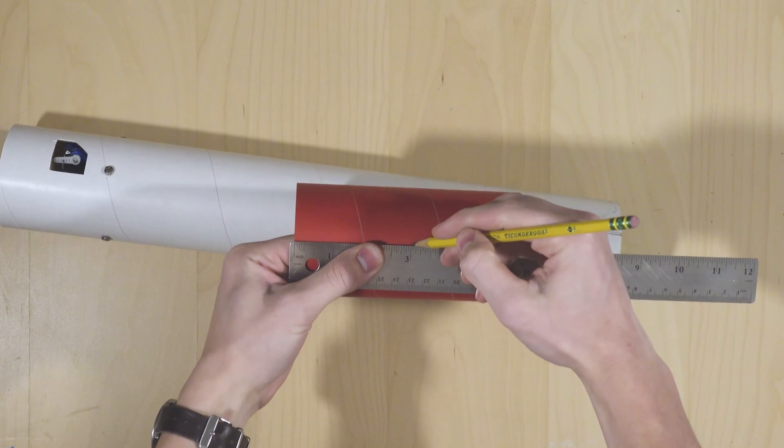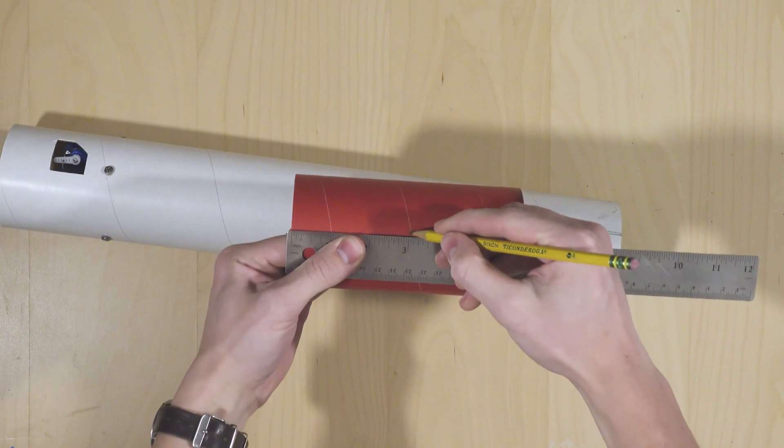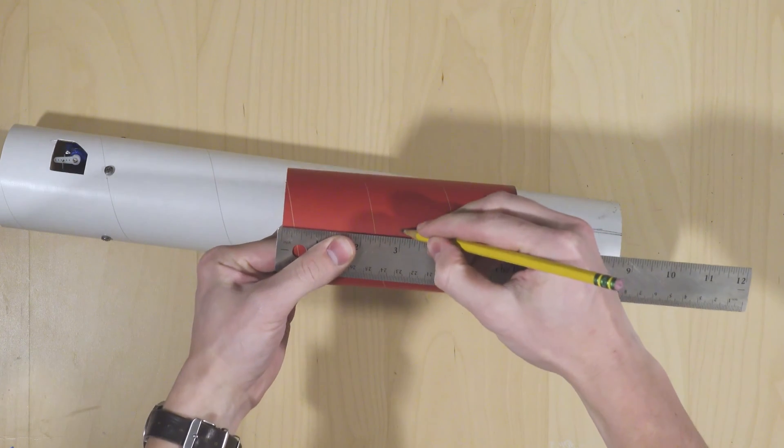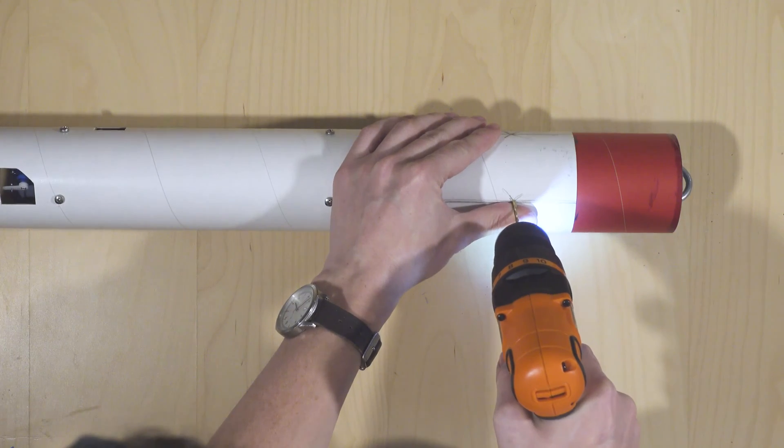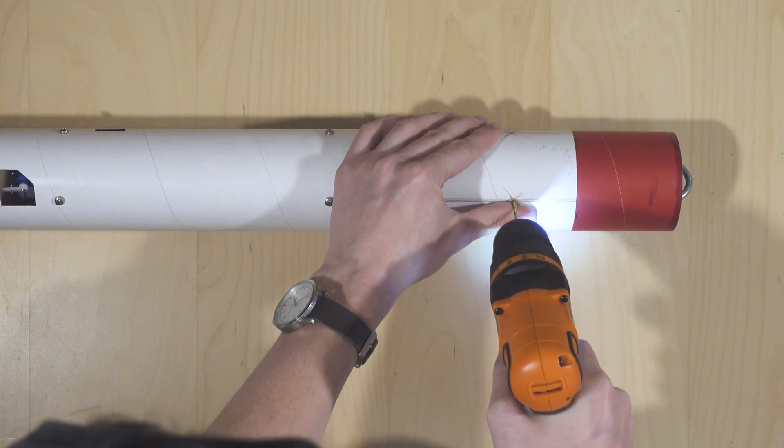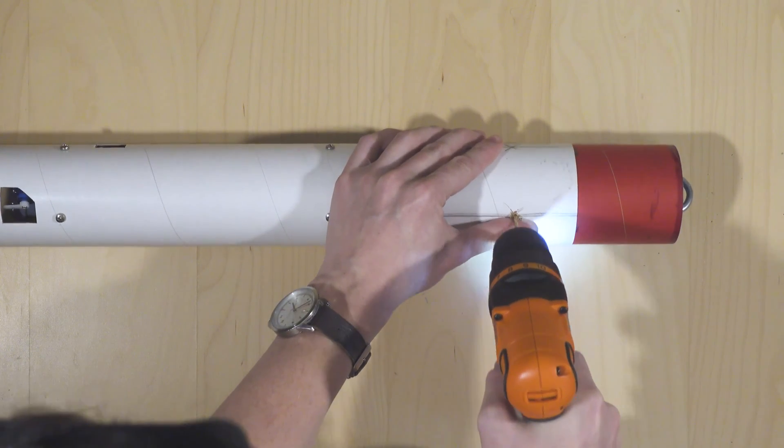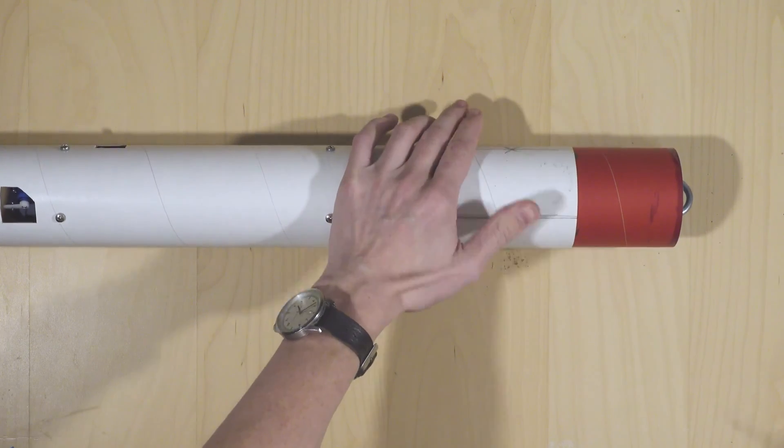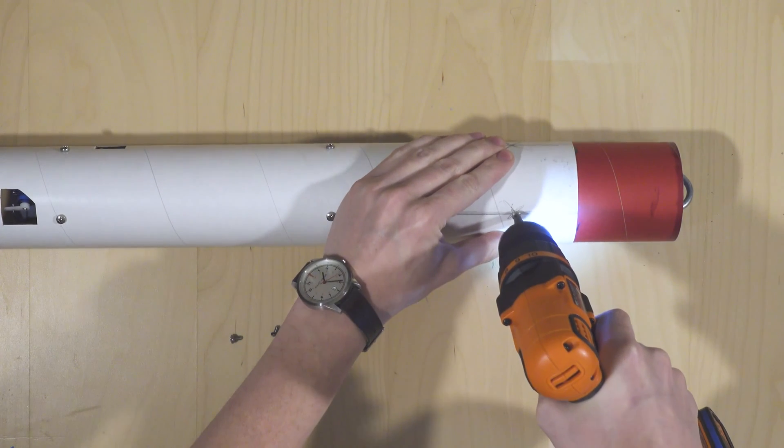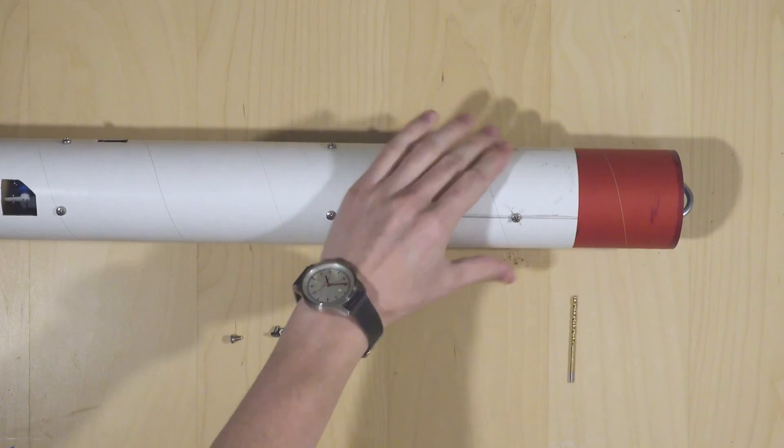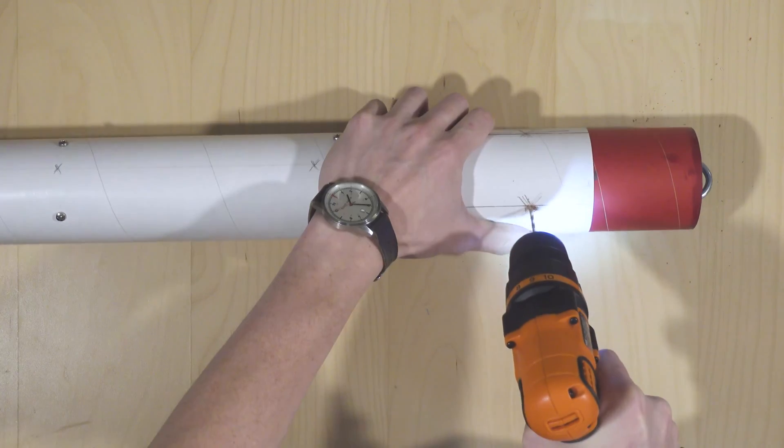It's a good idea to also mark this halfway point on the body coupler. This will help us assemble the rocket later on. I like to mark it in multiple places around the coupler, just to be clear. Sliding the coupler into the airframe to around the halfway point, we can now make our first drill hole. Once the hole has been drilled, we can place the first screw in to make sure the coupler does not rotate anymore. We'll repeat the process for the remaining three holes and screws.